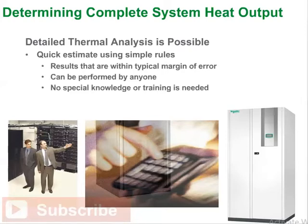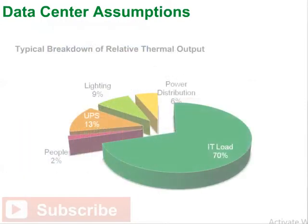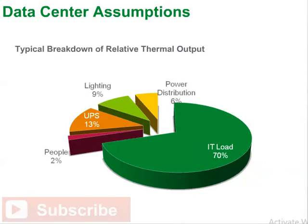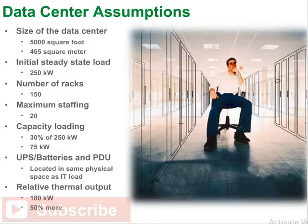Let's begin calculating total cooling requirements by demonstrating the quick estimate method. This pie chart illustrates the components that contribute to heat output in the data center. For our example, let's assume a 5,000 square foot, or 465 square meter, data center rated at 250 kilowatts. It holds 150 racks and a maximum staff of 20 persons. The data center is assumed to be loaded at 30% of capacity, which is typical, giving a total IT load of 75 kilowatts.